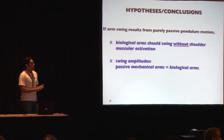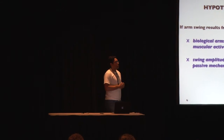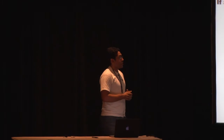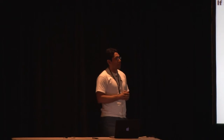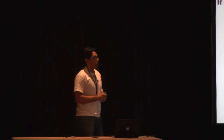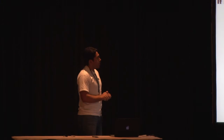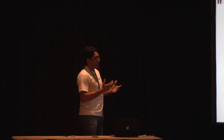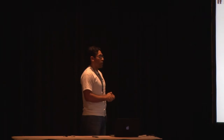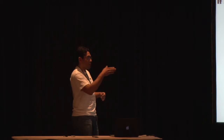An audience member asked about changing the passive dynamics of biological arms — for example, having them hang away from the head — which would change the natural frequency of the arms. The presenter agreed this is a good point not yet explored, noting it would definitely change the dynamics. The mass itself wouldn't have a large role in an ideal pendulum, but once friction is included, it could definitely change the amplitudes of a forced pendulum.